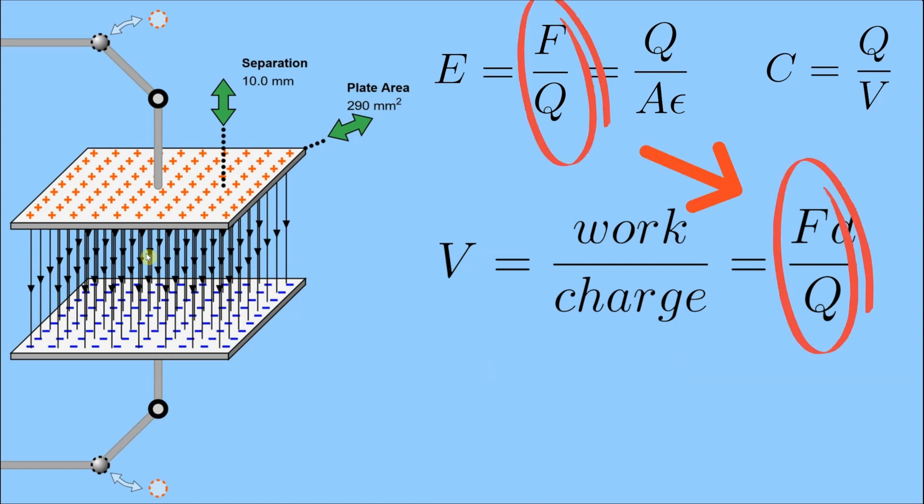Well, look at this, that F over Q in the equation is the electric field intensity. So another way to consider the voltage is that it's the electric field intensity times the distance that the charge is moved through that field.